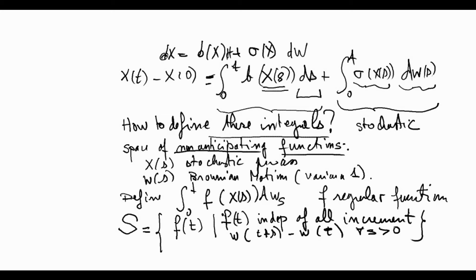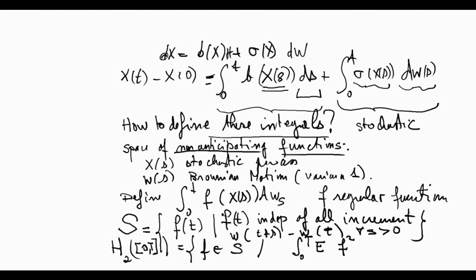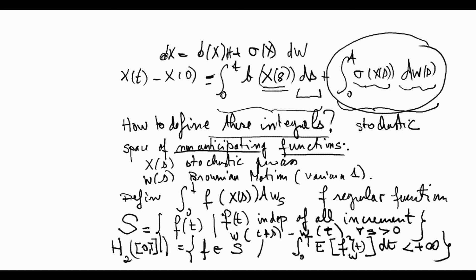We define a more restrictive space H²[0,T]: the space of non-anticipating functions in s such that ∫₀ᵀ E[f(t,ω)²] dt is finite. Under this condition, we can calculate the stochastic integral, and there is a meaningful limit to this quantity, which we are going to discuss now.